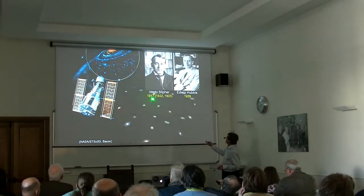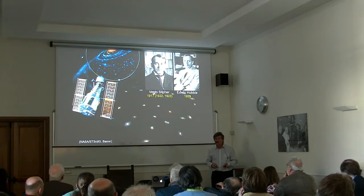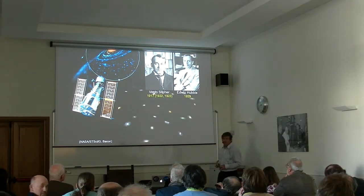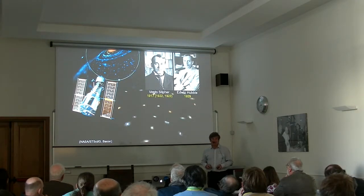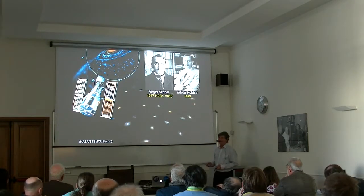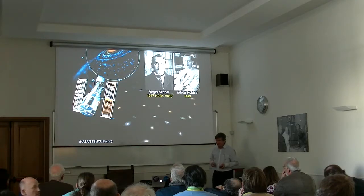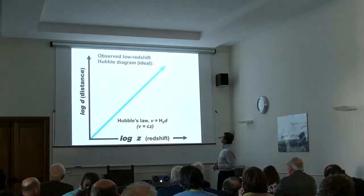By the way, Slipher in 1917 already had 24 or 25 redshifts, four of which were blue shifts. By 1922 he had 41, which he privately circulated. Arthur Eddington published those 41 in a book. Slipher was loath to publish, as was Lemaitre.